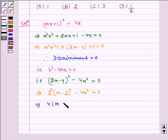Which implies 4(m - 2)² - 4m² = 0. Taking 4 out, we get (m - 2)² - m² = 0.